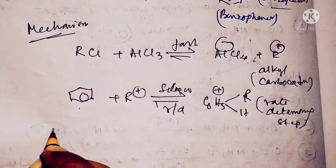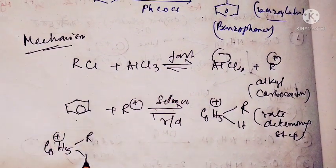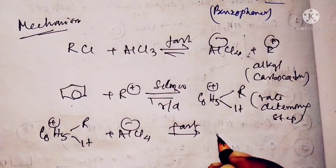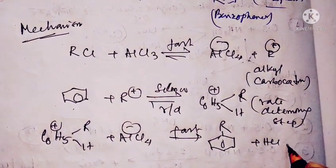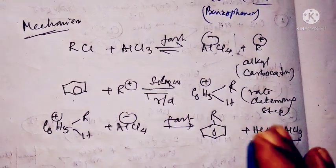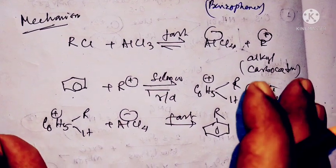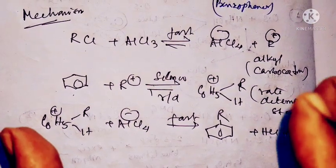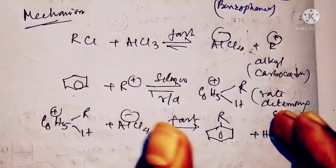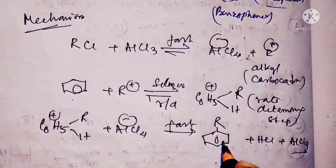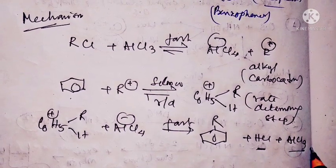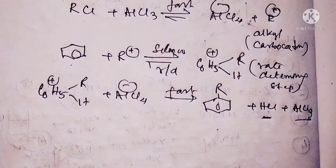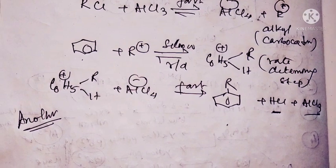C6H5R+ in presence of AlCl4 minus produces the alkylation product, with by-products HCl and aluminum chloride. The electrophile is formed by abstraction of halogen from the alkyl halide by AlCl3, which is a Lewis acid. The pi electron ring of benzene holds the carbonium ion, which finally forms a sigma bond with the ring carbon, and elimination of a proton forms HCl by taking the Cl from AlCl4 minus.